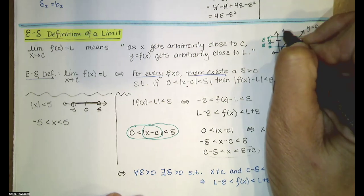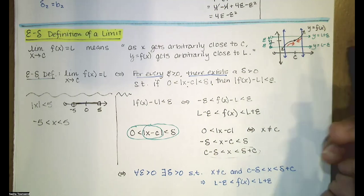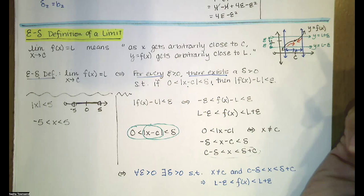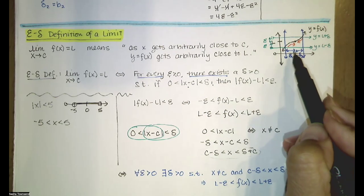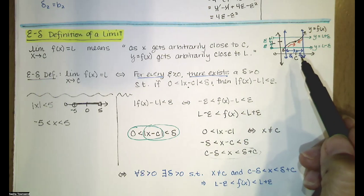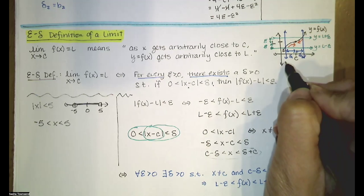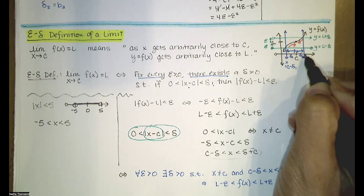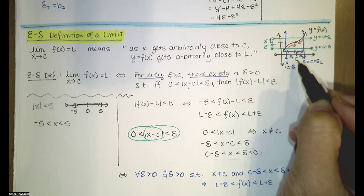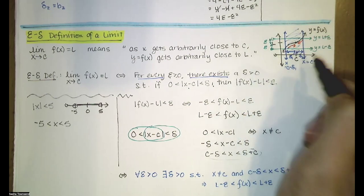We can draw vertical lines and ask which x values in that interval map to y values in the epsilon band. We think of these two intervals as having lengths delta one and delta two. If we want all x values in here to map to y values in there, we take the minimum of those two deltas — say x equals c minus delta one on the left and x equals c plus delta two on the right — and use that minimum so all x values map to y values within the epsilon band.